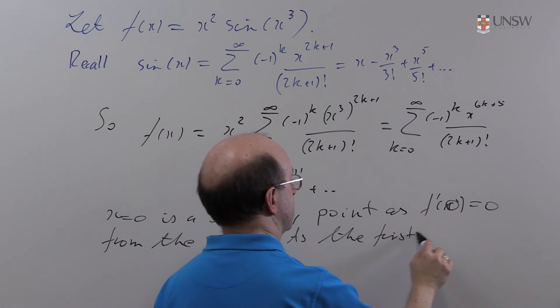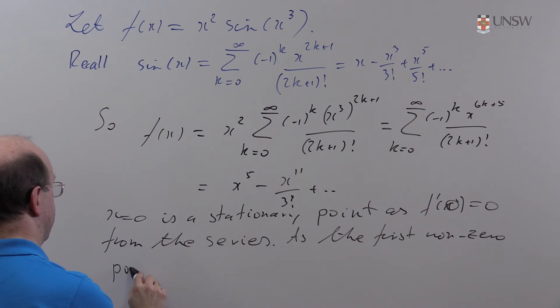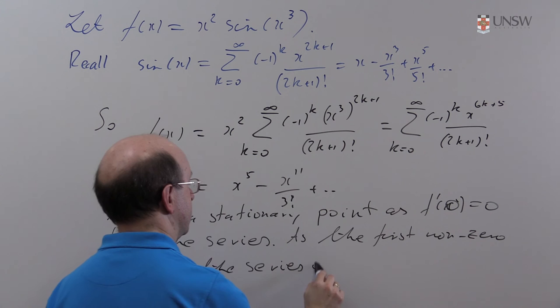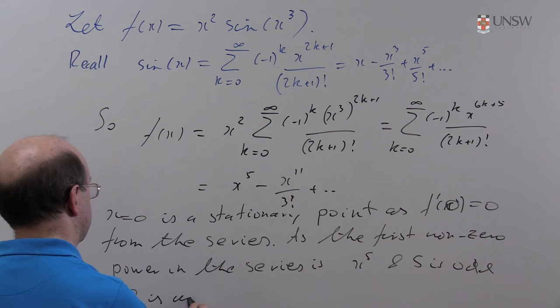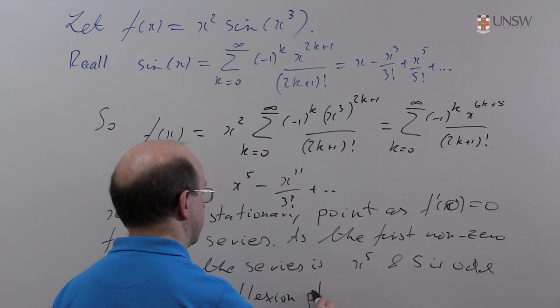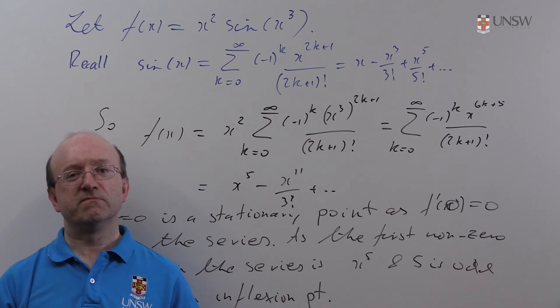So as the first non-zero power in the series is x^5, and 5 is obviously odd, zero is an inflection point. A horizontal inflection point, technically.